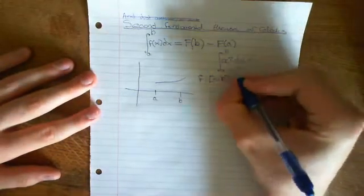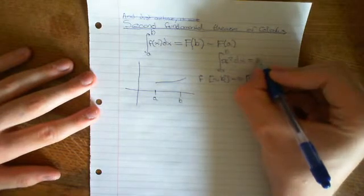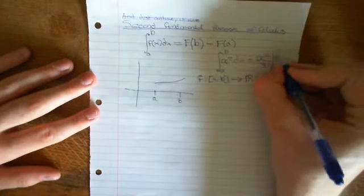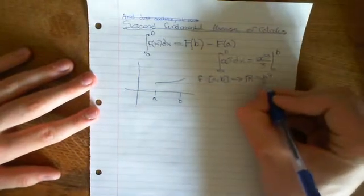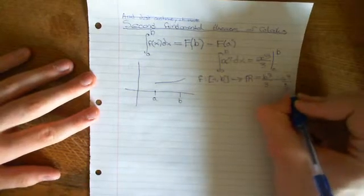Instead, what I'm going to do is just say, I know what function differentiates to give that. It's the anti-derivative x³/3. Therefore, all I need to do is evaluate that at the end points. So the value is B³/3 minus A³/3.